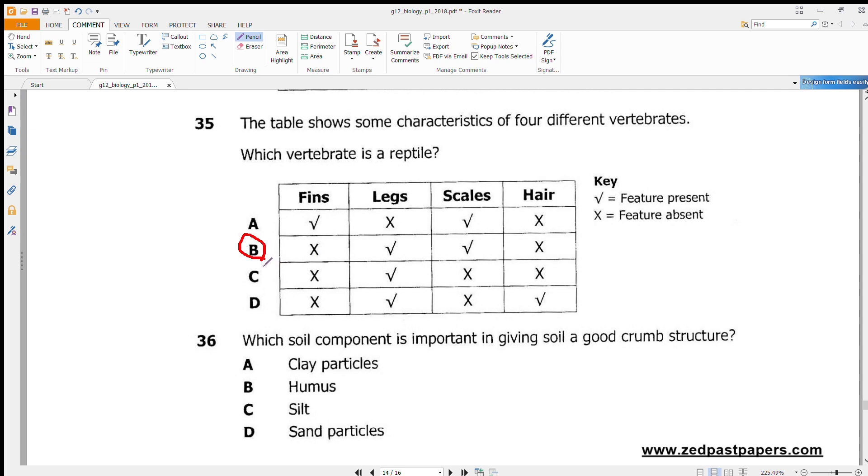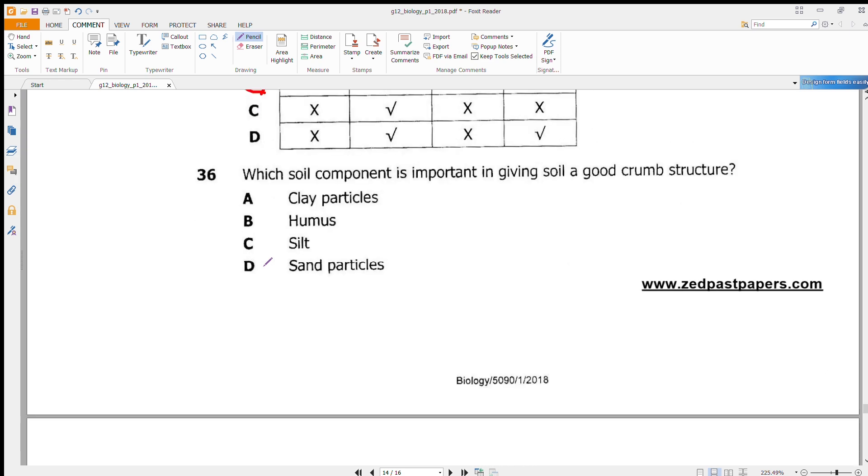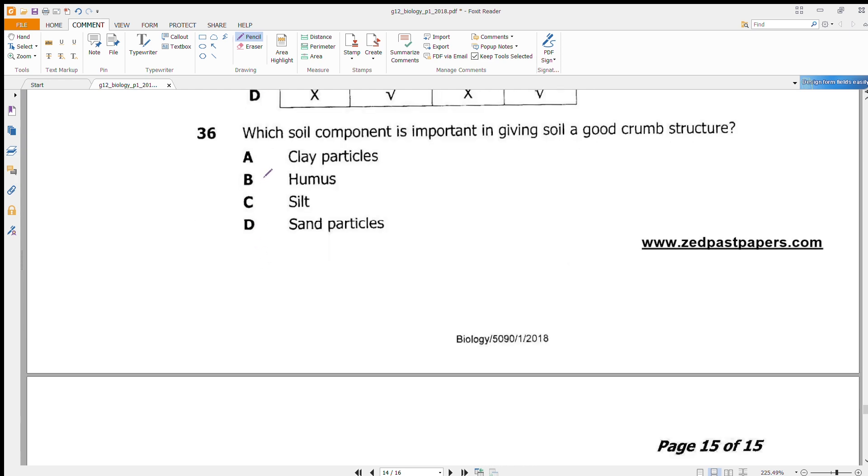Which soil component is important in giving a good crumb structure? The answer here is humus. Humus is sticky and it holds the soil particles together, and that's how it makes them crumbs.